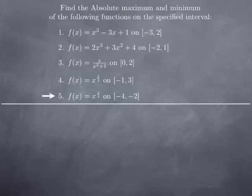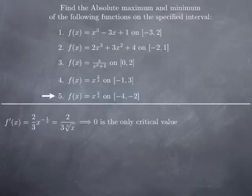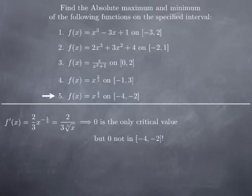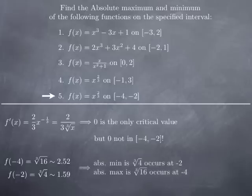Now let's consider the same function x^(2/3) but on a different interval, from -4 to -2. As we have seen, 0 is the only critical value for the function x^(2/3). But this time, the critical value does not lie in the interval. Therefore we evaluate the function only at the endpoints, -4 and -2, since there is no critical value inside this interval. At -4, the function takes the value ∛16, which is approximately 2.5, and at -2, the function takes the value ∛4, which is approximately 1.6. Therefore, the absolute minimum is ∛4, occurring at -2, while the absolute maximum is ∛16, occurring at -4.